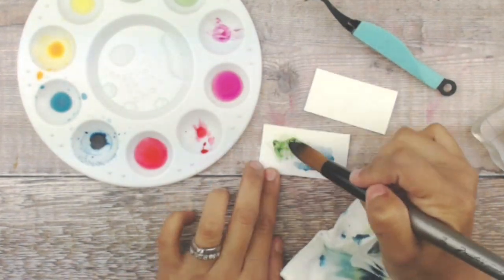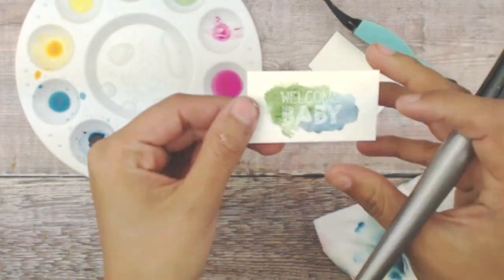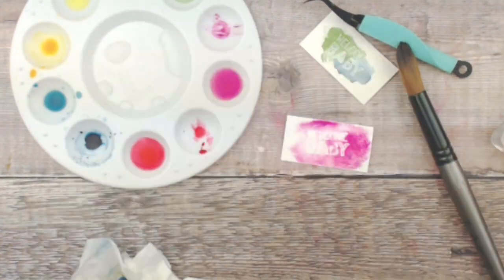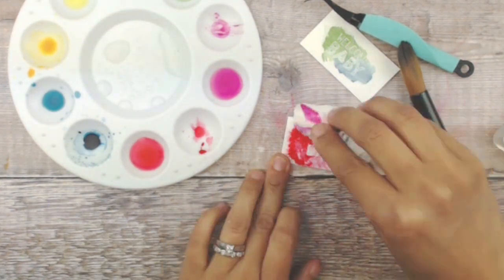Next we're going to do a little different effect. We're going to spray some water onto our watercolor paper adding the ink as you see it spreads around and it makes a really cool effect.